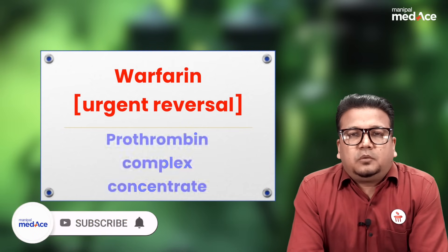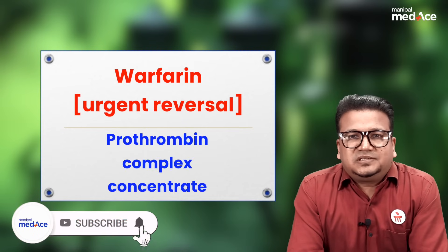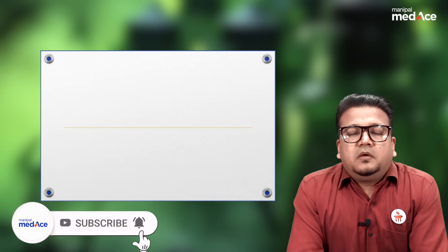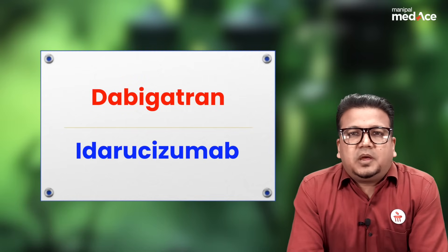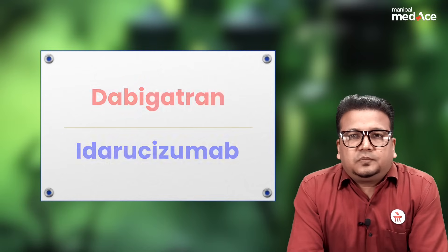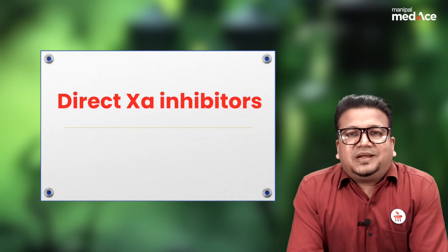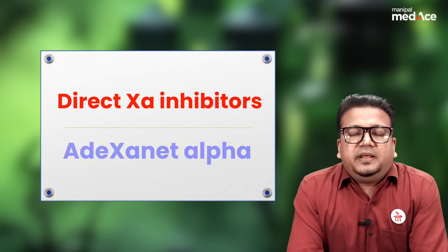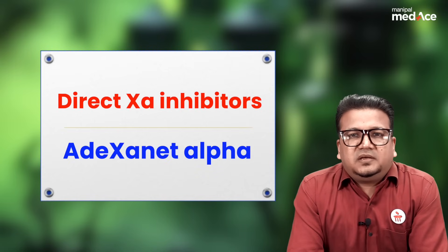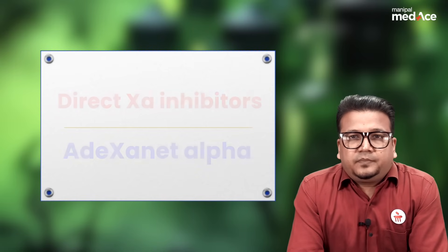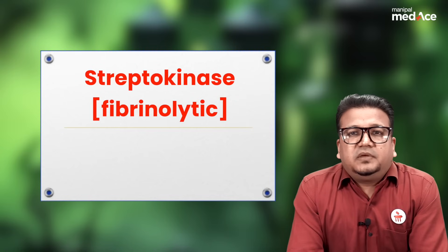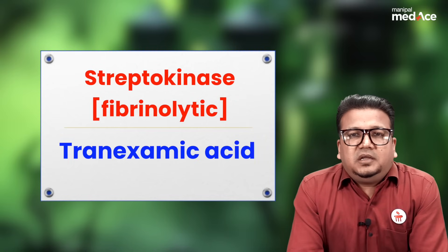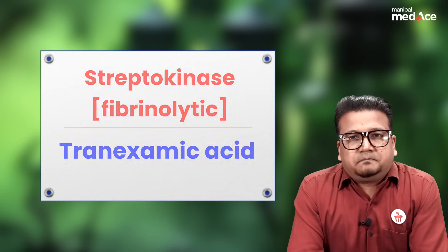Should you require urgent reversal of warfarin bleeding, use prothrombin complex concentrate. For dabigatran, idarucizumab is the antidote. For direct Xa inhibitors, andexanet alfa is the antidote. For streptokinase, we give an antifibrinolytic in the form of tranexamic acid.